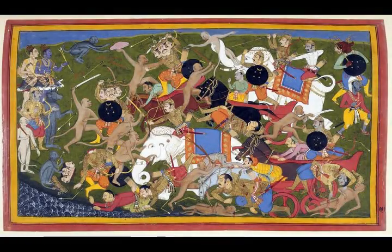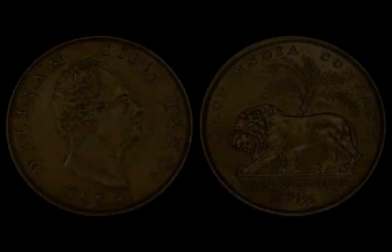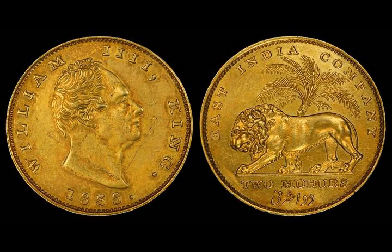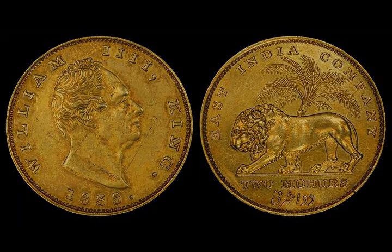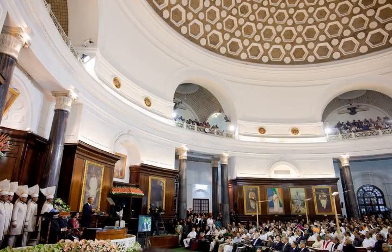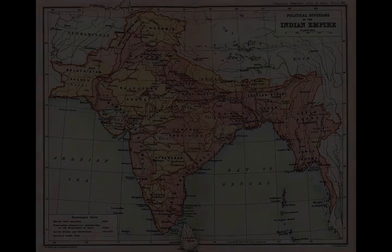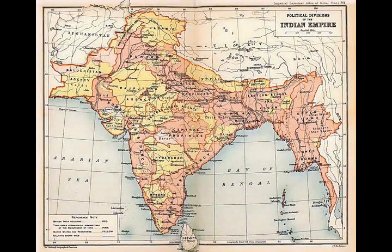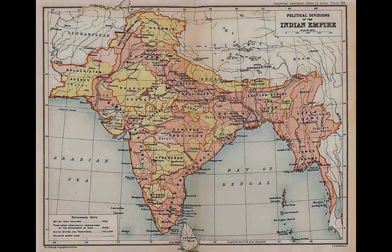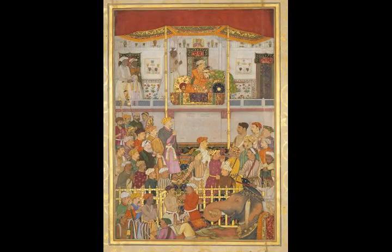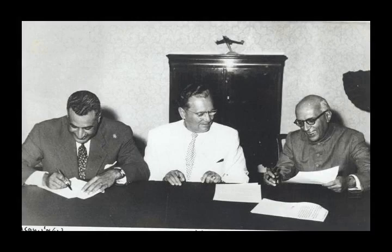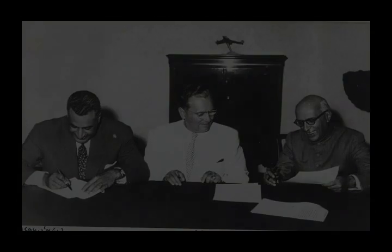By the early 18th century, a number of European trading companies, including the English East India Company, had established coastal outposts. The East India Company's control of the seas, greater resources, and more advanced military training and technology led it to increasingly assert its military strength. These factors were crucial in allowing the company to gain control over the Bengal region by 1765. Its further access to the riches of Bengal enabled it to annex or subdue most of India by the 1820s. India was then no longer exporting manufactured goods, but was instead supplying the British Empire with raw materials. Many historians consider this to be the onset of India's colonial period.